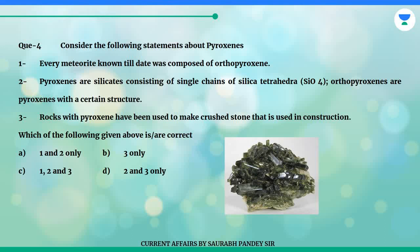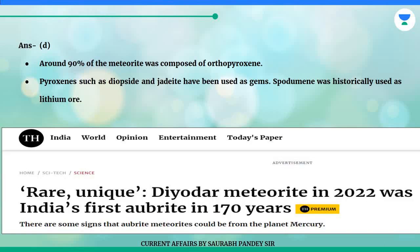Which of the following given above is correct? A. One and two only. B. Three only. C. One, two and three. D. Two and three only. The answer is D. Around 90% of the meteorite was composed of orthopyroxene. Pyroxenes such as diopside and jadeite have been used as gems; spodumene was historically used as lithium ore.